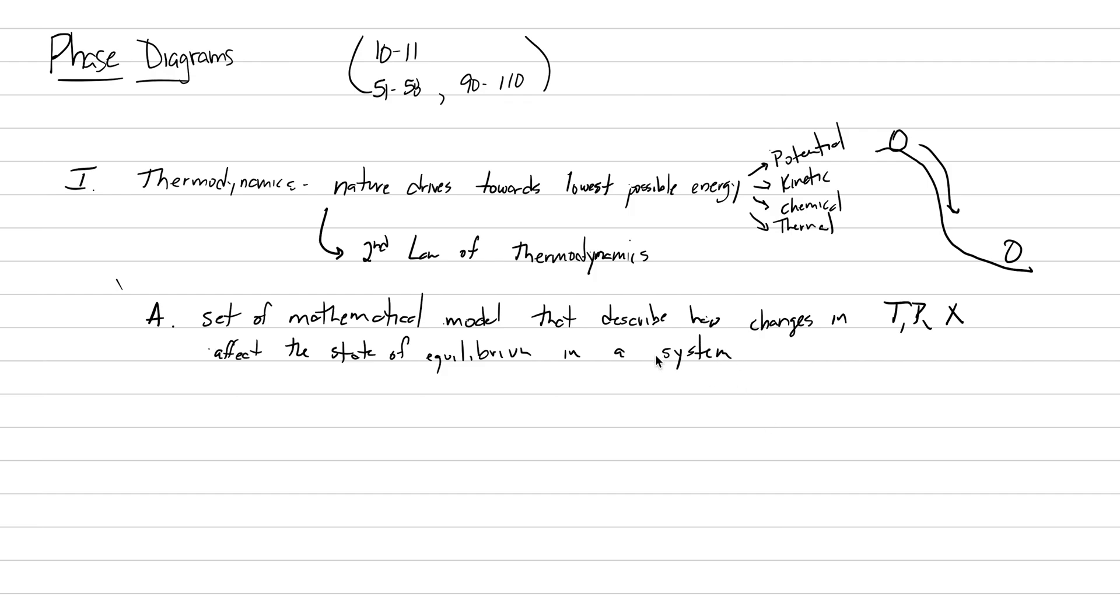I feel like this has some jargon in it as well. Let's define system and equilibrium. System, in our case, is a petrologic system. A petrologic system is a tectonic environment. If we're dealing with metamorphic rocks, it can be a magma chamber if we're dealing with igneous rocks.